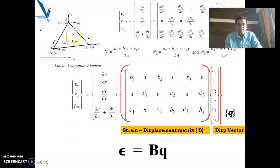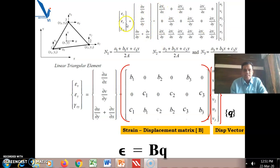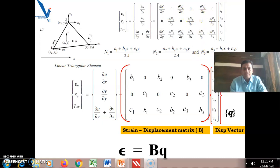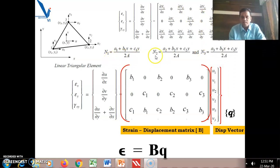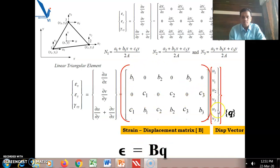We have already seen that this is a linear triangular element expressed in terms of the xy coordinate system. These are the node points 1, 2, and 3, because this is a 3-node triangular element. We have seen that this strain-displacement relation is obtained for the triangular element, and these are the shape functions we already derived. Once you differentiate with respect to N1, N2, and N3, we get the B matrix — the strain-displacement relation matrix — and epsilon is equal to BQ, where Q is the displacement vector.